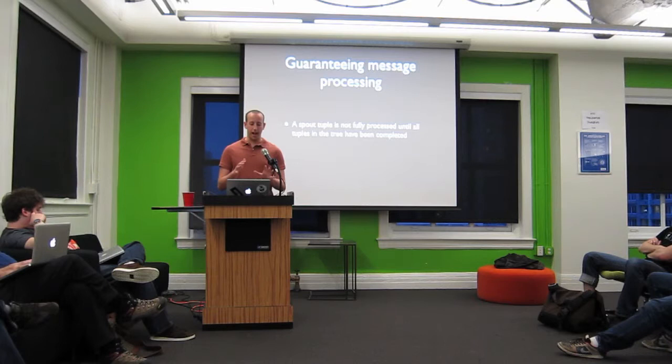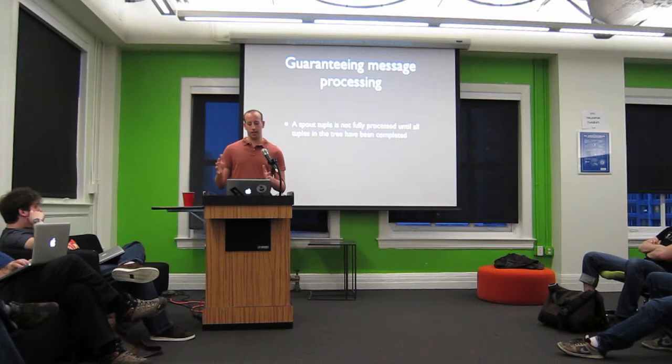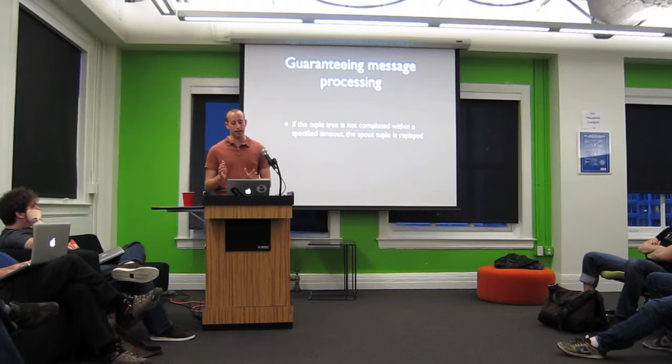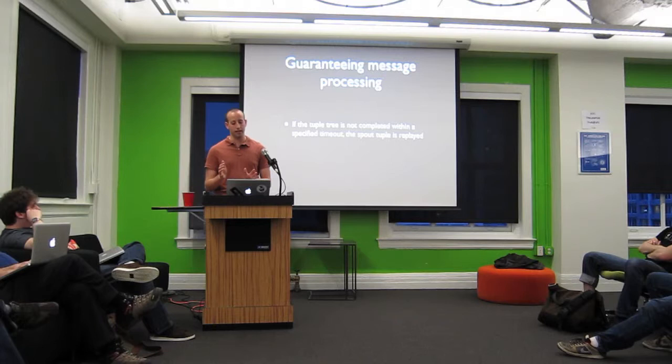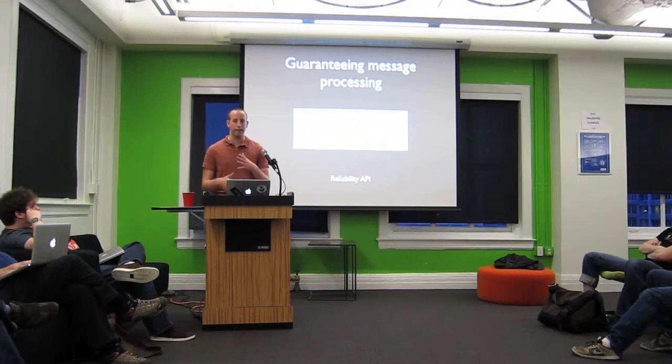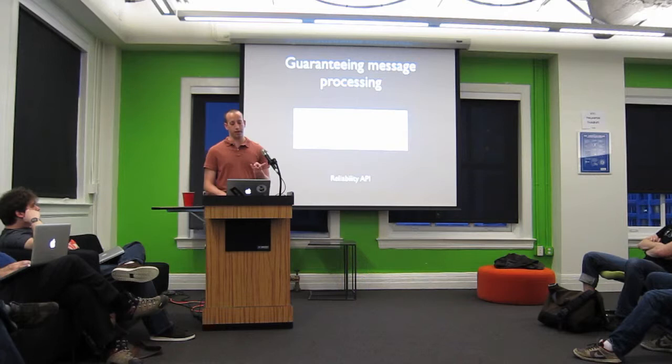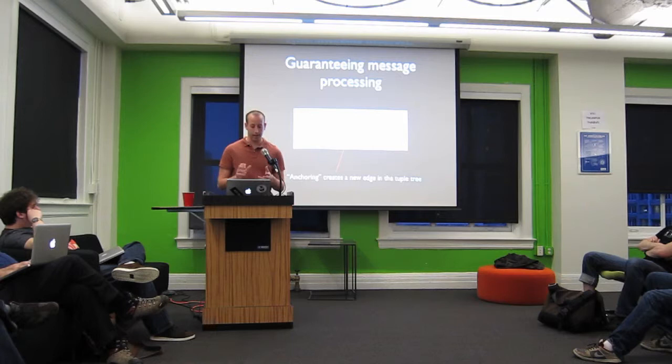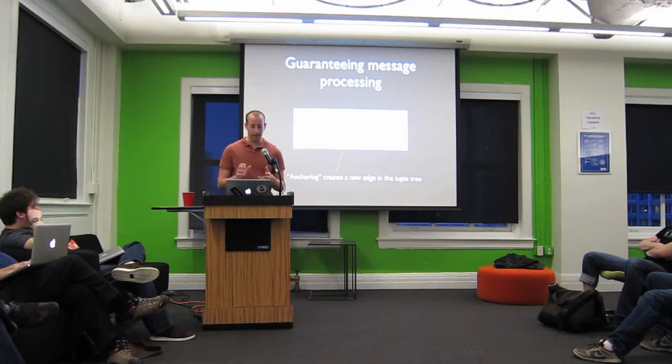Storm says that a spout tuple is not considered processed until the entire tuple tree has been exhausted and every individual tuple in the tree has been marked as completed. If the tuple tree is not completed within some timeout — and this timeout defaults to 30 seconds — then the spout tuple is considered failed and will be replayed from the source. There's a little bit of work you have to do to take advantage of this reliability guarantee, and it's pretty straightforward. There are two things you have to do. The first is you have to tell Storm whenever you're creating an edge in that tuple tree. Here's an implementation of the word splitter in Java.